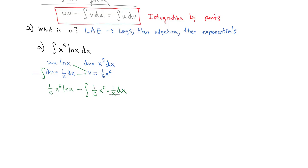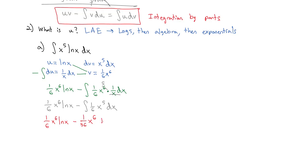The x in the denominator reduces with one of the x's from x to the sixth, so we have one-sixth x to the sixth times natural log of x minus the integral of one-sixth x to the fifth dx. That integral is straightforward: increase the exponent by one and divide by the new exponent. Six times six is thirty-six, giving us the final antiderivative plus a constant.